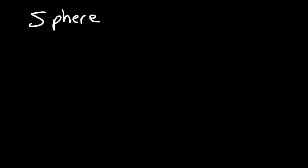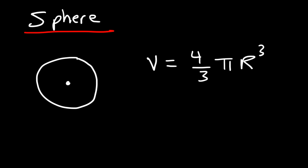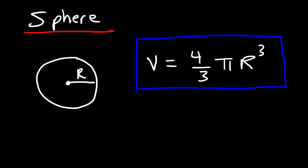The first shape we're going to talk about is the sphere. It looks like a circle if you draw the two-dimensional version of it, but if you draw the 3D version of it, it's a sphere. The volume of a sphere is equal to 4/3 pi r cubed, where r is the radius of the sphere. The radius is the distance between the center of the sphere and any point on the surface of the sphere.